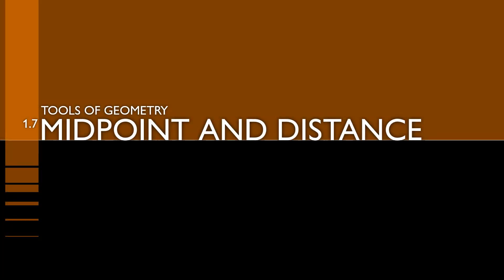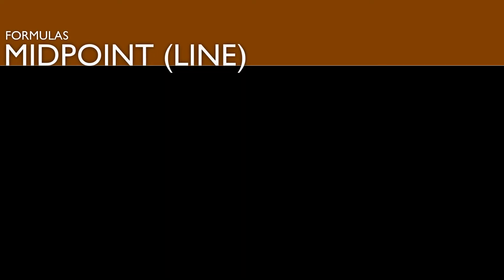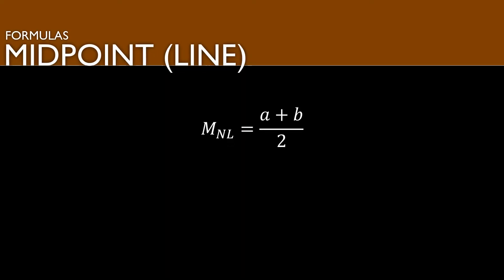Now we move on to midpoint and distance. We're going to look at this both on a number line and on the coordinate plane. The first formula we need to look at is the midpoint formula. The midpoint on a number line is equal to a plus b over 2. You take your two coordinates, plug them into a and b, and work that out to get the midpoint on a number line.